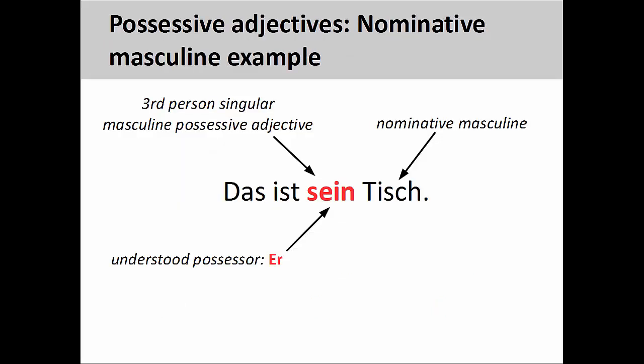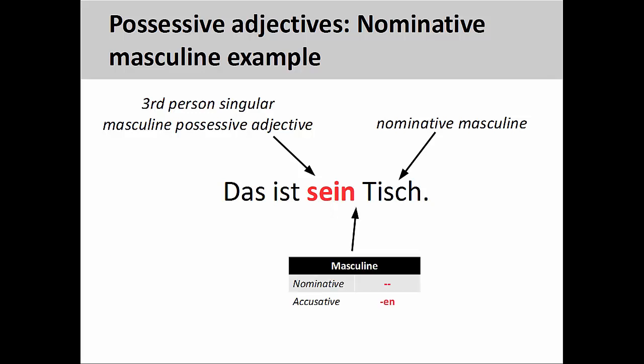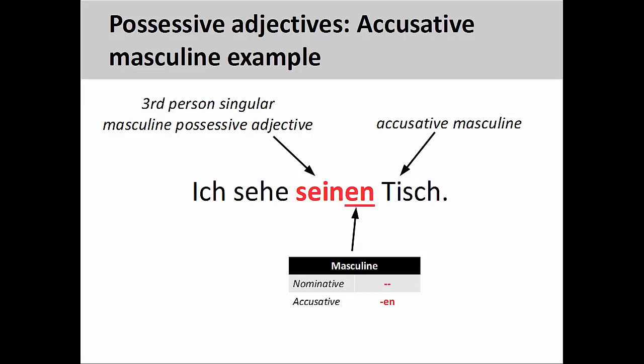Let's decline a few possessive adjectives to see how they work. In this sentence, 'Das ist sein Tisch' — that is his table — the number and gender of the understood possessor, 'er,' agrees with the number and gender of the possessive adjective. It is third person singular masculine. But since the masculine noun 'Tisch' is in the nominative case, the ending for the possessive adjective must also be masculine nominative. This changes, however, when the masculine noun is in the accusative case: 'Ich sehe seinen Tisch' — I see his table. The possessive adjective still agrees with the number and gender of the understood possessor, but here the ending must show that the adjective modifies a masculine noun in the accusative case.